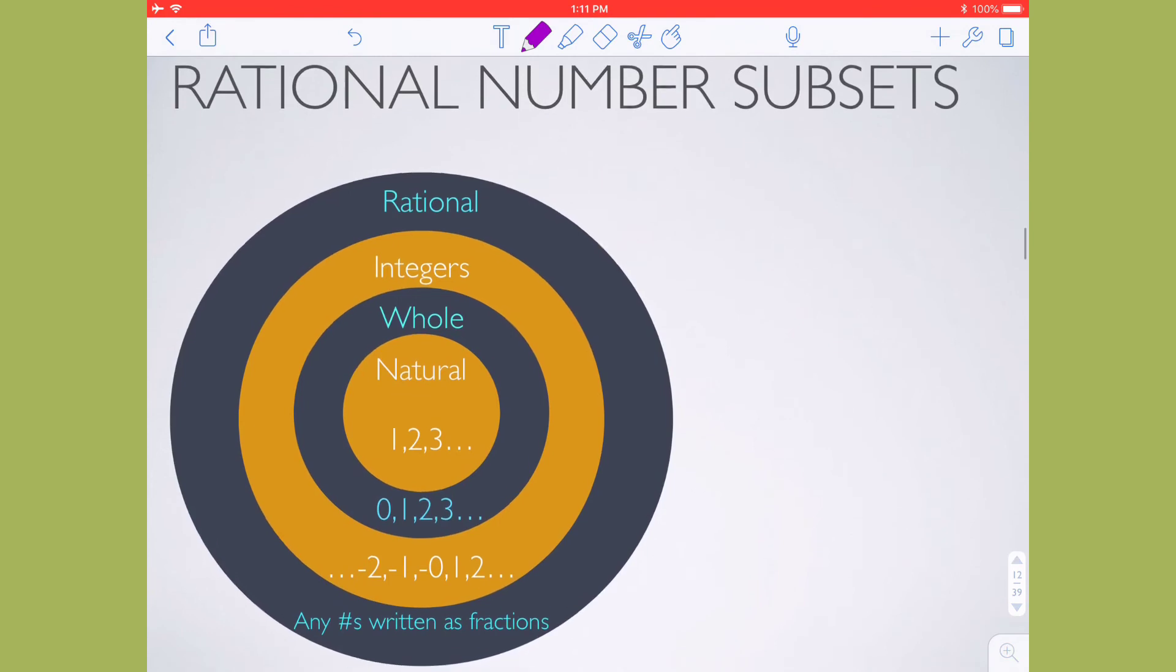So rational number subsets, various examples here for you. Any number written as a fraction is rational. My integers, including 0, 1, 2, 3, and then going backwards into negative values are my integers. Including 0 and positive numbers are whole values, and then my counting numbers. So if you think about elementary school, when you first learn to count, you count 1, 2, 3, 4 when you're counting your fingers. Those are your natural numbers. You naturally start at 1.